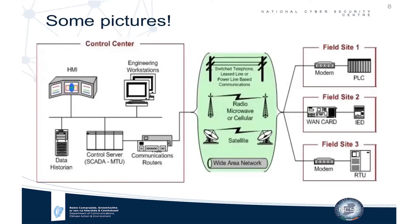Here is a diagram of a SCADA system. On the left-hand side is the control center: the HMI, engineering workstations, data historian, control server, SCADA master termination unit, and communications routers. On the right-hand side are different field sites — one, two, three — which SCADA controls out in the field across different parts of the country. Field sites may contain PLCs, intelligent electronic devices, or remote terminal units, with a communications link between the control center and field sites.